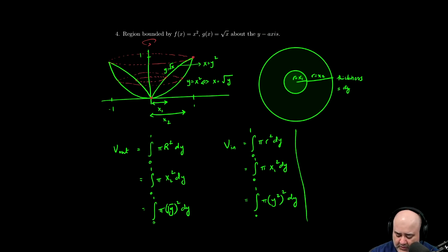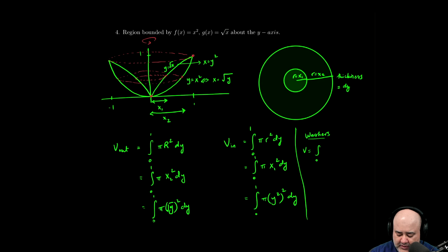the volume would be the integral from zero to one, where we start slicing and where we stop slicing, of pi times the outer radius squared minus the inner radius squared with respect to y in this case.